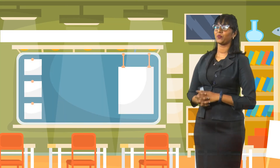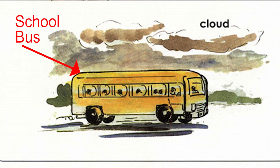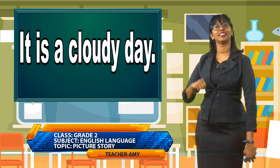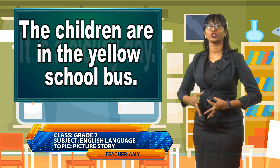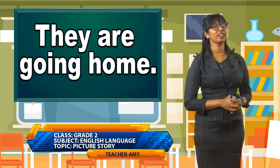So let's take a look at this picture again. The clouds are dark, so it's a cloudy day. We can also see there is a bus in this picture. Since it's a school bus, there are school children in this bus — children just like you. We can say, it is a cloudy day. We can also say, the children are in the yellow school bus. They are going home.